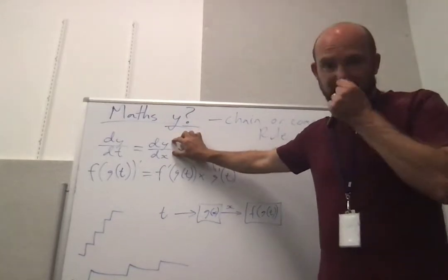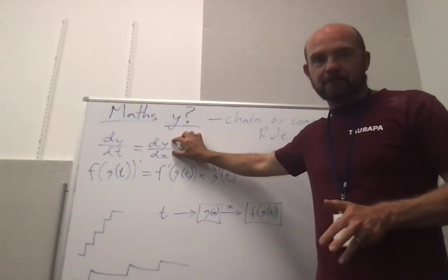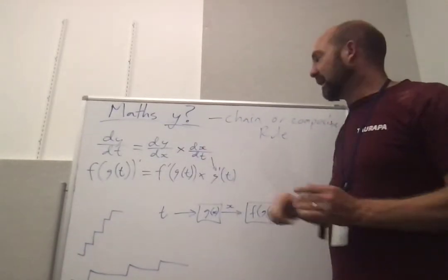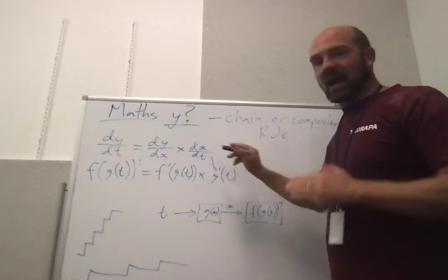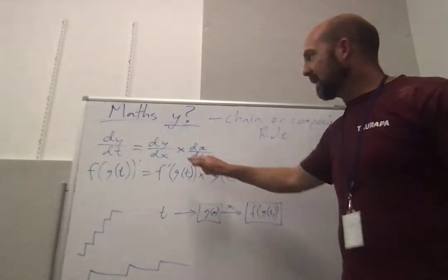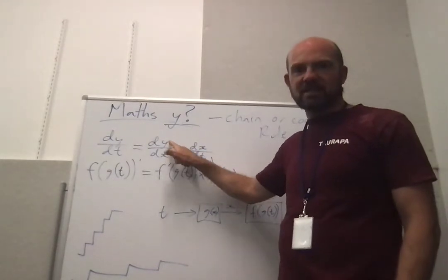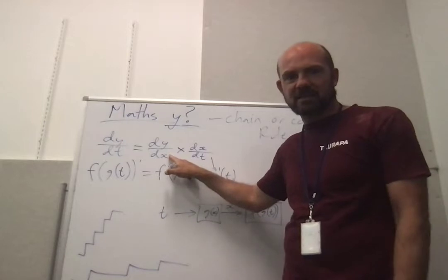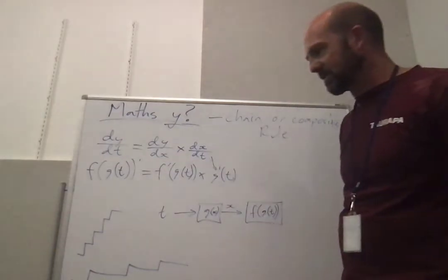One will be how steep are the stairs, and the other will be how fast are we walking. So how quickly are we moving across with respect to time? So this is our speed and this is how steep the stairs are. We'll be familiar with dy over dx as the steepness of a graph, now it's steepness of stairs.